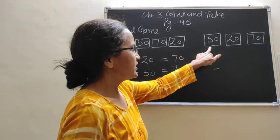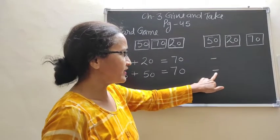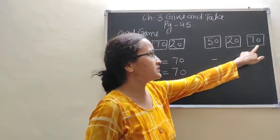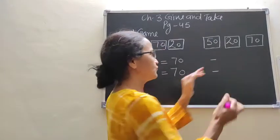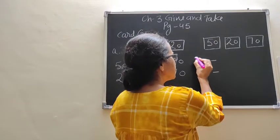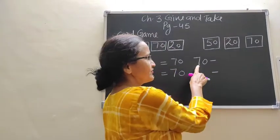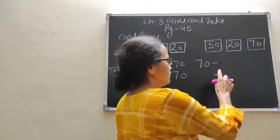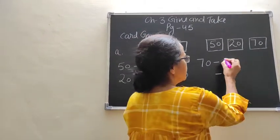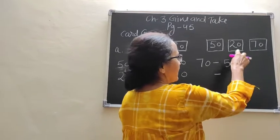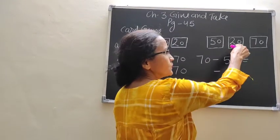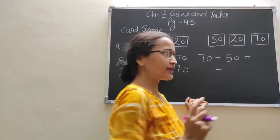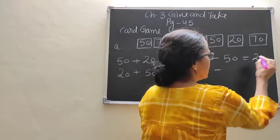Similarly, here is a sign of minus. In minus, we take the greater number. Which number is greater? That is 70. So right here: 70. You can write either of the two remaining numbers — so right here: 50. If you write 50 here, then the number left is 20. So right here: 20.